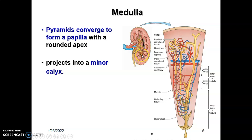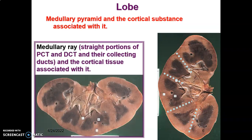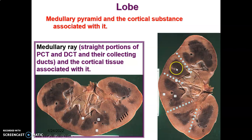The papilla projects into a minor calyx. Many minor calyces join to form major calyces, and many major calyces form the renal pelvis before you get to the ureter. So the papillae of the pyramids empty into minor calyces, minor calyces converge to form major calyces, major calyces form the renal pelvis that enters the ureter. The pyramids have cortical substance around them — this is what you call a renal lobe.